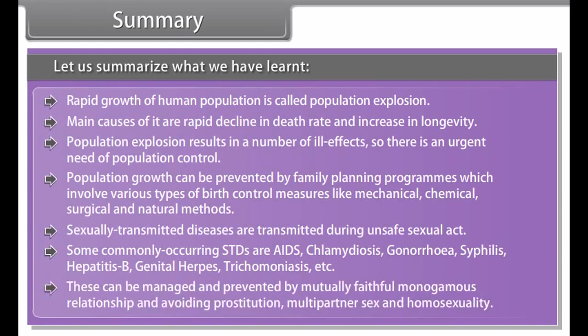Rapid growth of human population is called population explosion. Its main causes are rapid decline in death rate and increase in longevity. Population explosion results in a number of ill effects, so there is an urgent need for population control through family planning programs involving mechanical, chemical, surgical, and natural methods. Sexually transmitted diseases are transmitted during unsafe sexual acts; common STDs include AIDS, Chlamydiosis, Gonorrhea, Syphilis, Hepatitis B, Genital Herpes, and Trichomoniasis. These can be prevented by mutually faithful monogamous relationships and avoiding multi-partner sex.